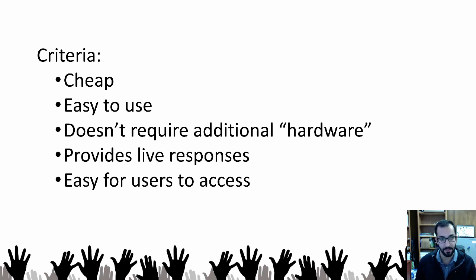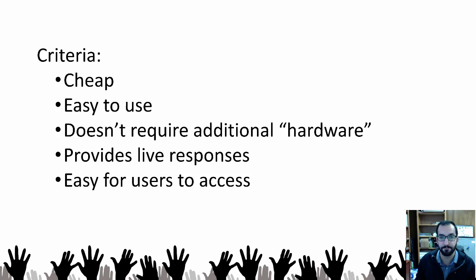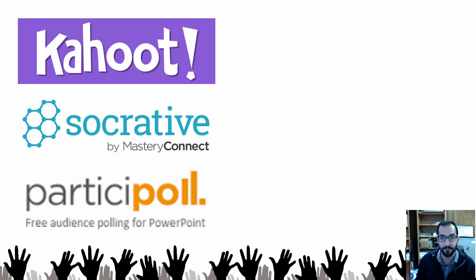Some of the criteria I was looking at: the solution has to be cheap, easy to use, and can't require any additional hardware — I didn't want anything requiring clickers or expensive equipment to carry around. It provides live responses, so I can poll them live in a talk and discuss that with the group if necessary. And it has to be really easy for users to access. Some of the systems I'm going to discuss include Kahoot, Socrative, and Participle.